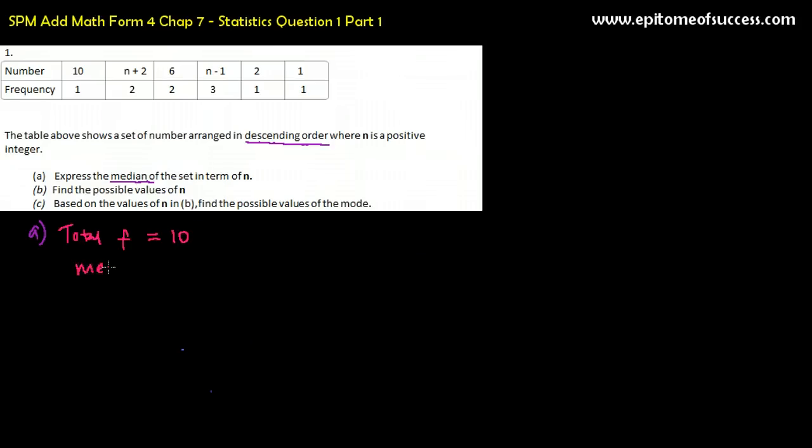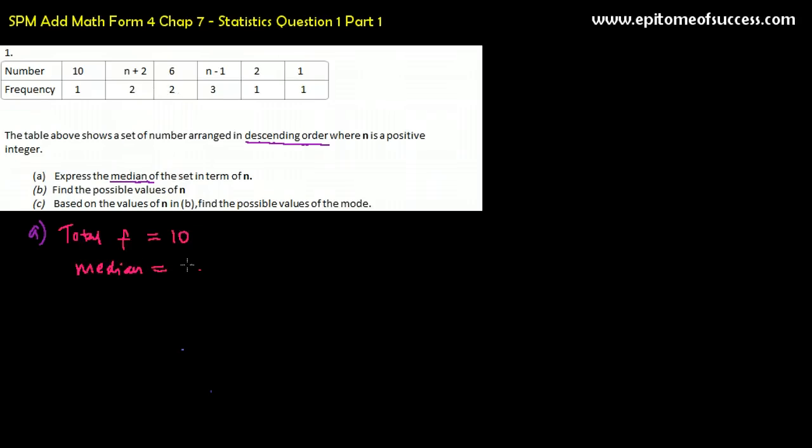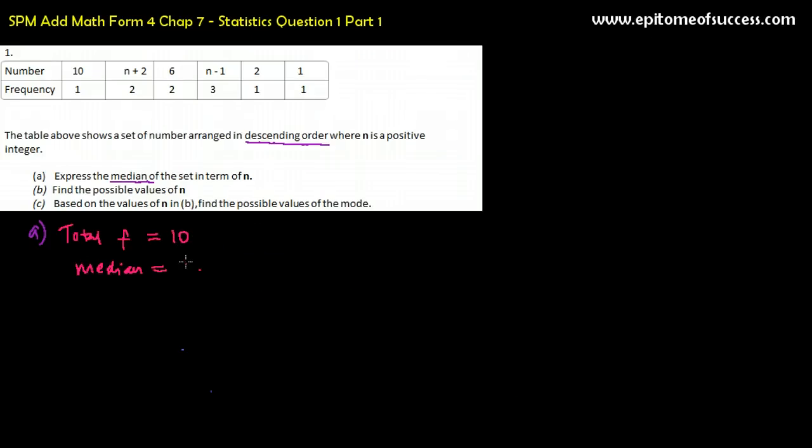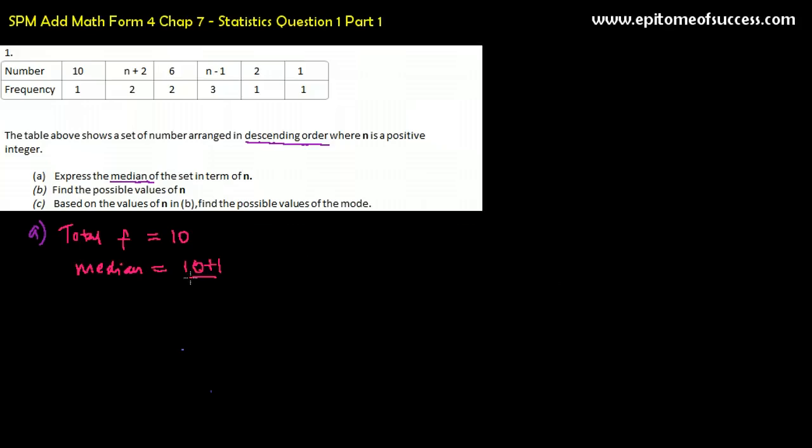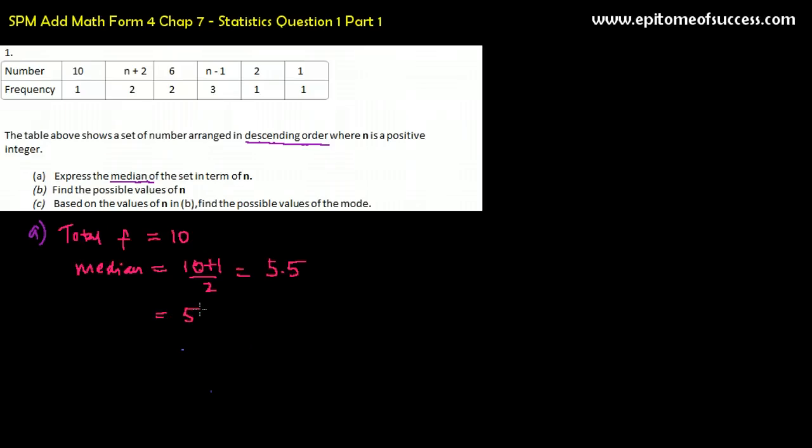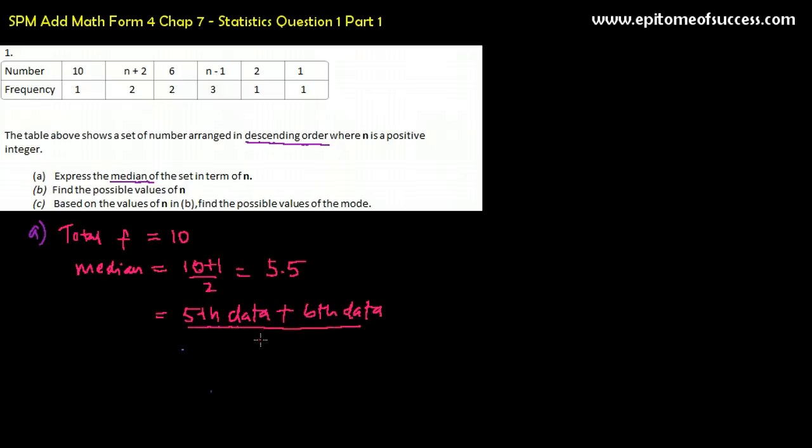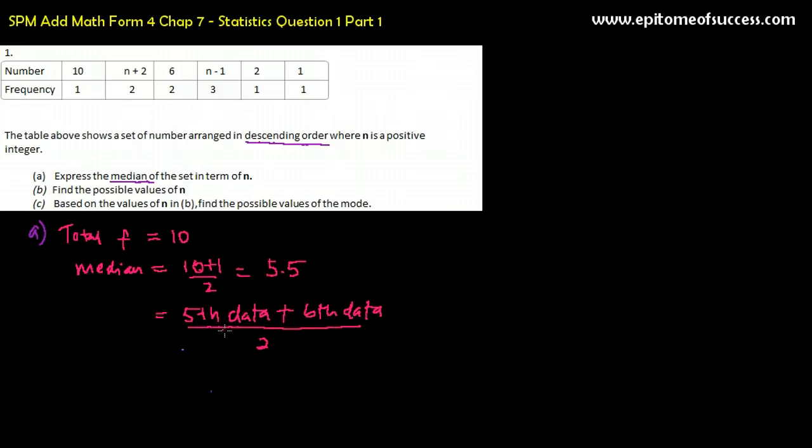So median, if it is in an ungrouped data, to find the median and the data is an even number. There are 10. 10 is an even number of data. You have to do 10 plus 1 divided by 2. That gives you 5.5. So this tells me that the median is the fifth data plus the sixth data divided by 2. That means the median, or the number that is in the middle, is somewhere between the fifth and the sixth number arranged in ascending or descending order.